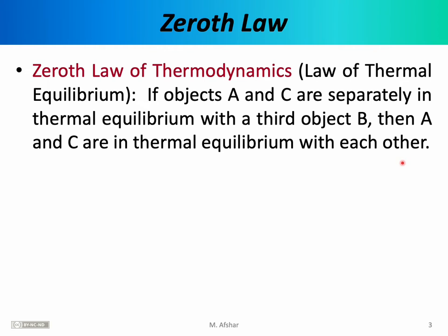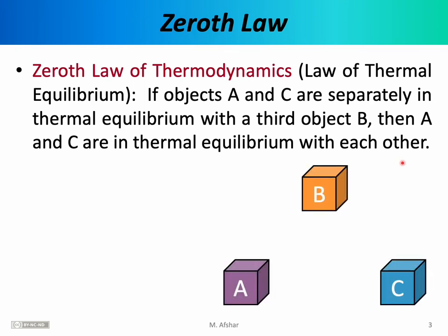Think about that for a few seconds — it's somewhat abstract. Maybe I can explain it better using a picture. Suppose we have three objects: A, B, and C. These three objects could be any three objects. You could have, for example, a block of steel, a block of copper, and a block of aluminum, but they could also be a block of ice, the air surrounding that block of ice, and the table on which the ice rests. The three objects could really be any three objects — solid, liquid, or gas.